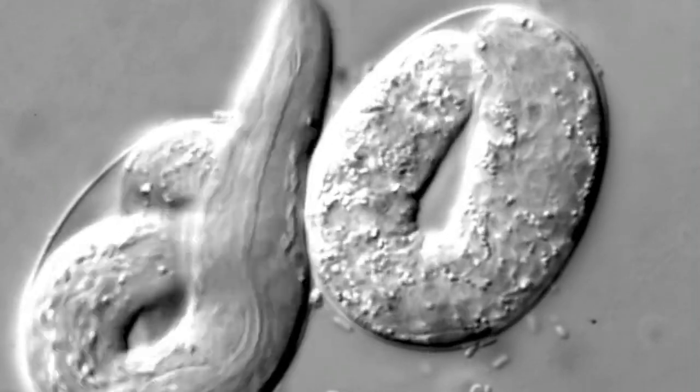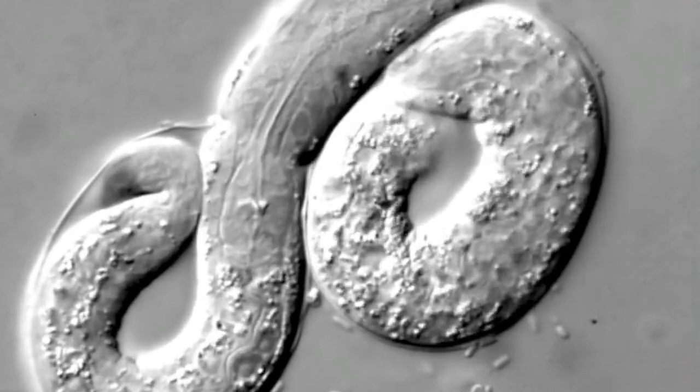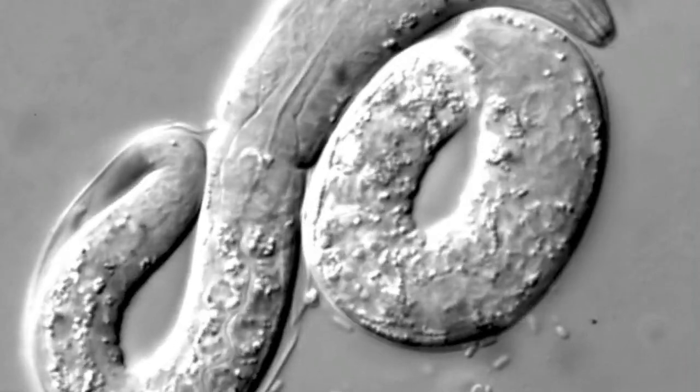There are two forms: hermaphrodites and males. Hermaphrodites have 959 somatic cells, while males have 1,031.